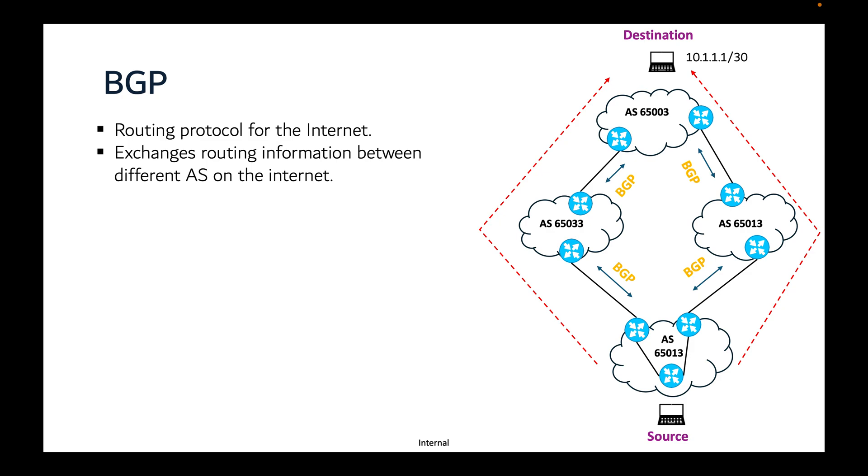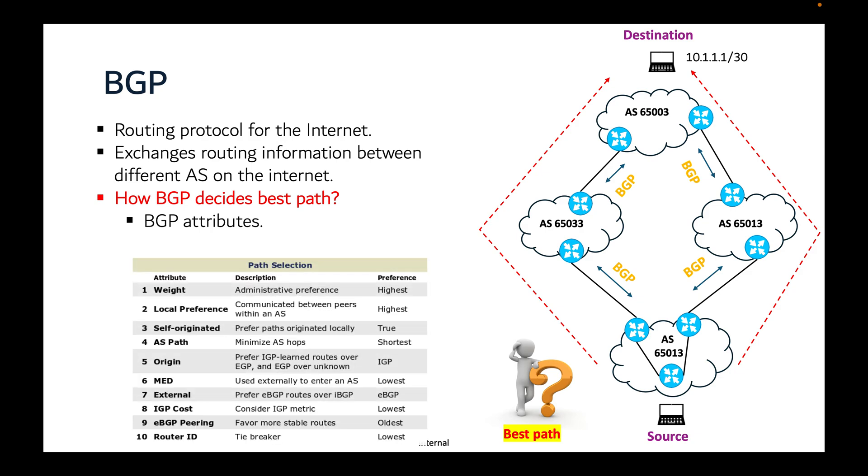BGP selects the best path to a destination using a series of attributes. These attributes act as decision criteria that influence the path selection process. From an AS point of view, if you have multiple exit points to reach a particular destination, how does BGP decide which path is best?